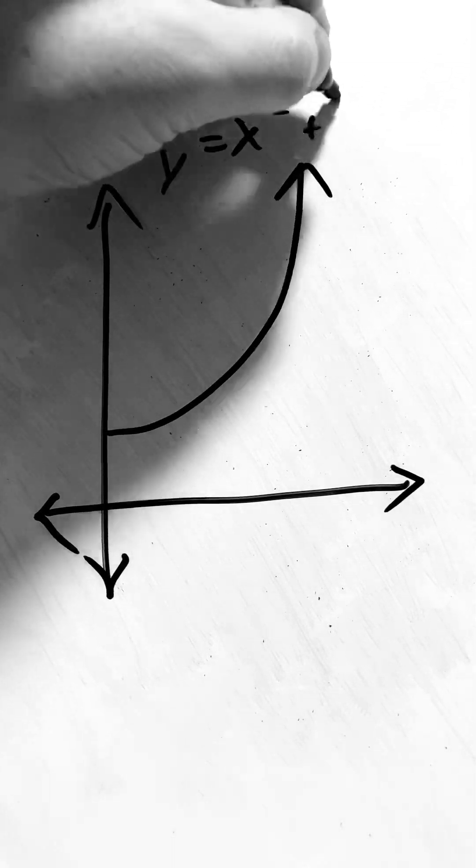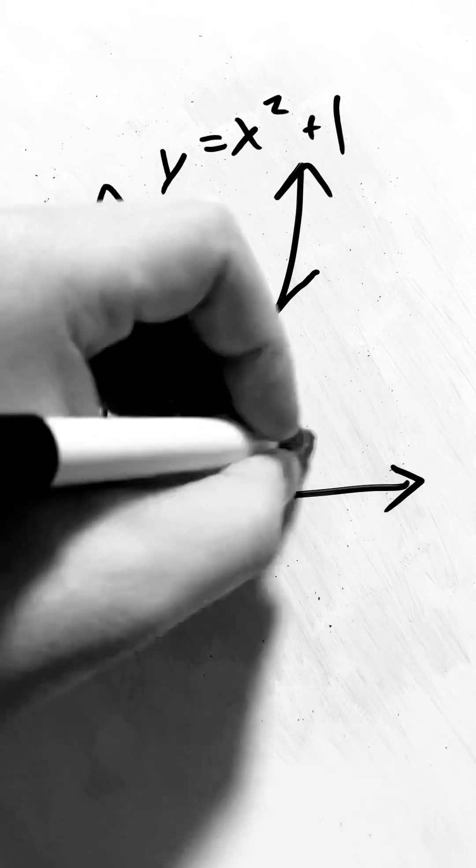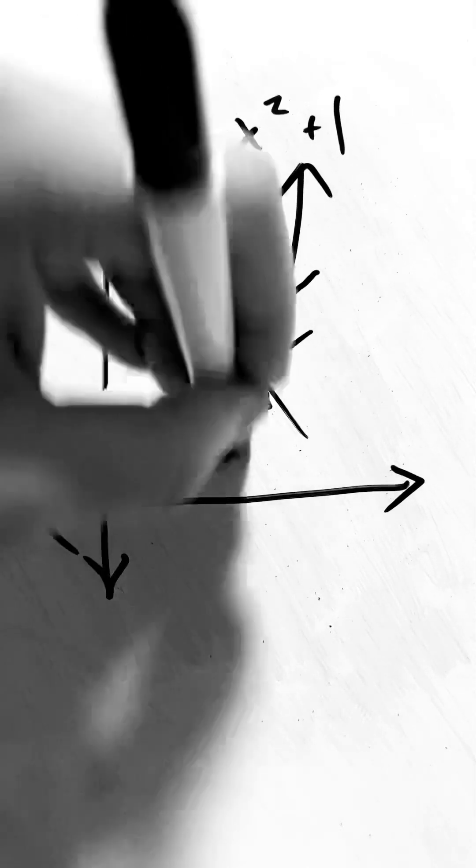Say we have the line y equals x squared plus 1. If we try the same method, it doesn't work. There's no straight line on this curve. So what do we do? We have to modify it.